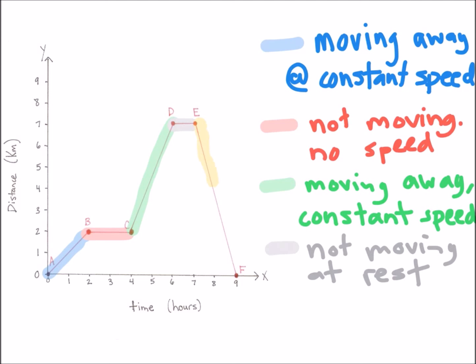The final segment involves moving back to where we started from 7 kilometers back to 0 kilometers. So we're moving back to our initial starting point and we can say that it's at constant speed because the slope is the same throughout the whole segment.